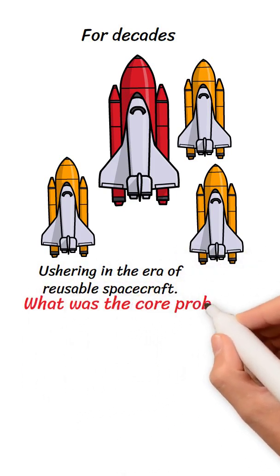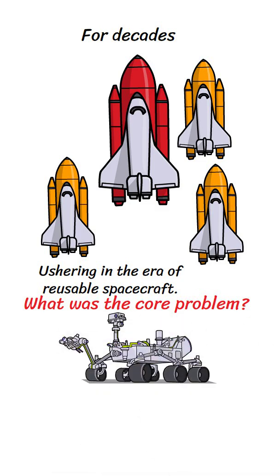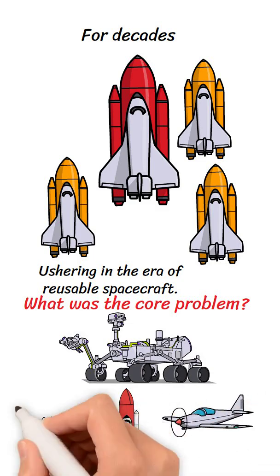What was the core problem? NASA needed a vehicle that could launch like a rocket, orbit like a spacecraft, and land like a plane, all while being reusable to reduce mission costs.